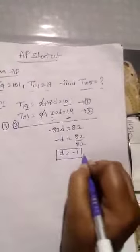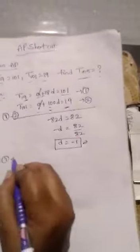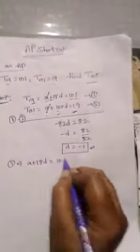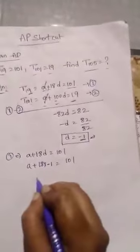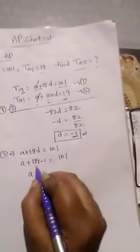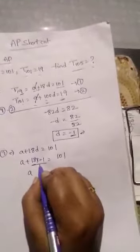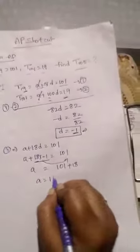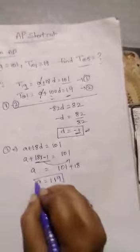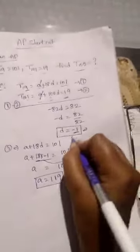So we know D value. We have to find A value. So equation 1, A plus 18D equal to 101. Put D value here. A plus 18 into minus 1 equal to 101. A minus 18 comes to this side. 101 plus 18, A equal to 119. So we know A value and D value.